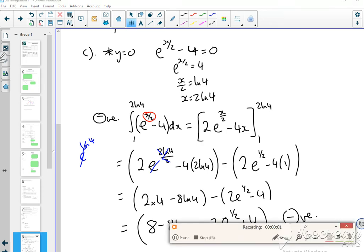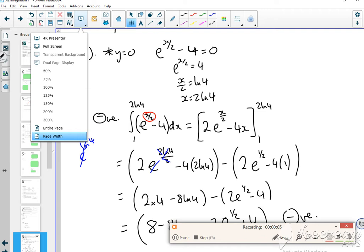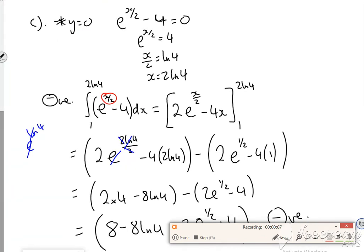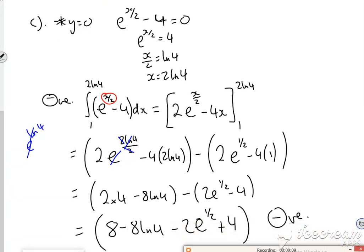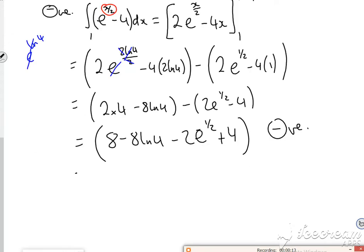Right then, now I want to do the positive area, which is an integral from 2 ln 4 to 4 of e to the x over 2 minus 4 dx.